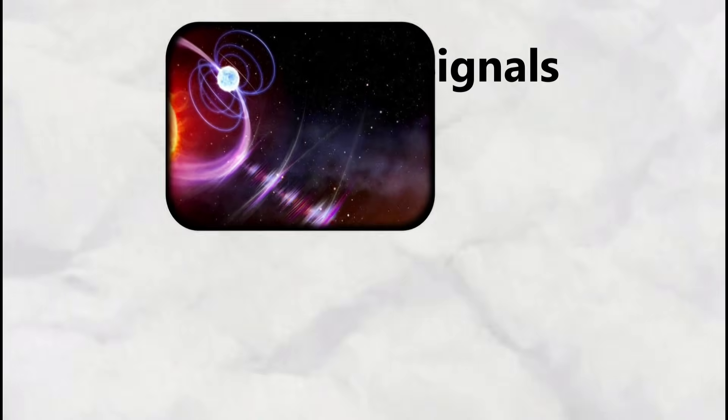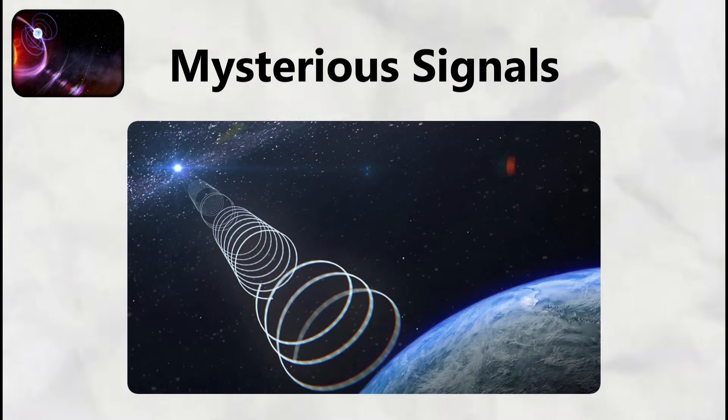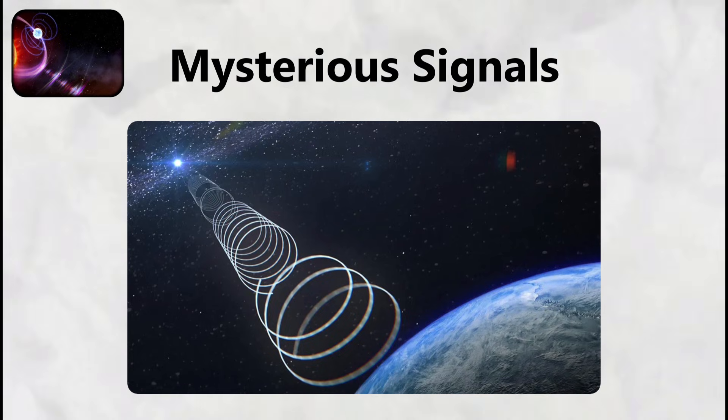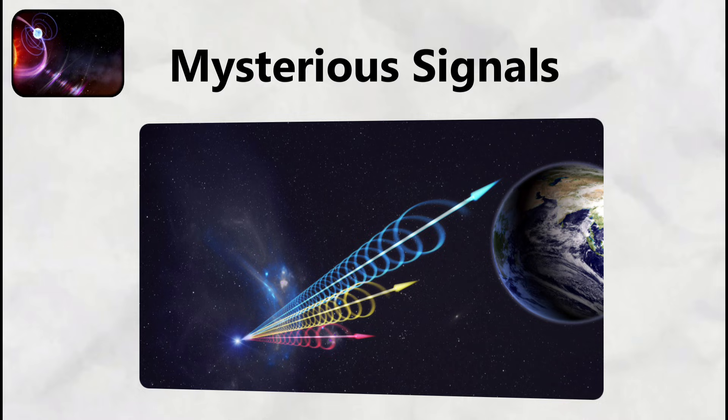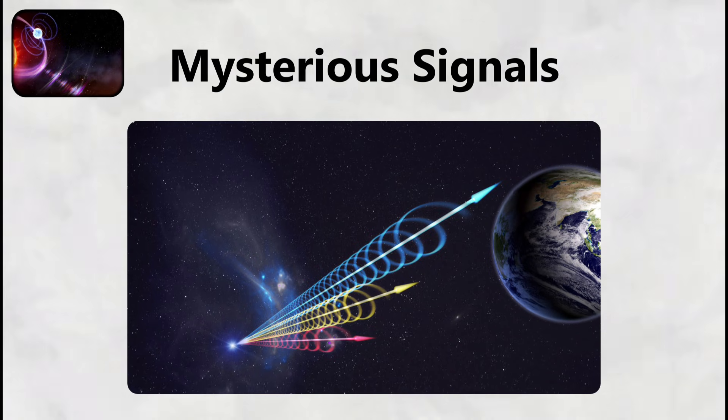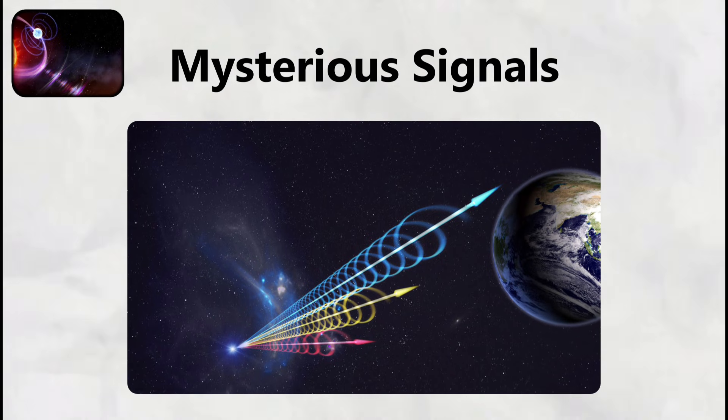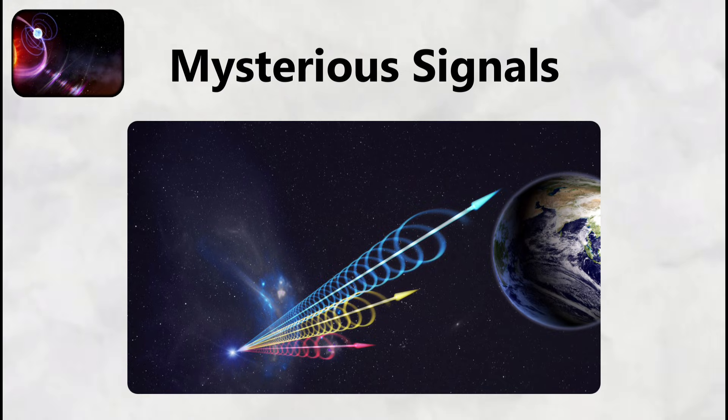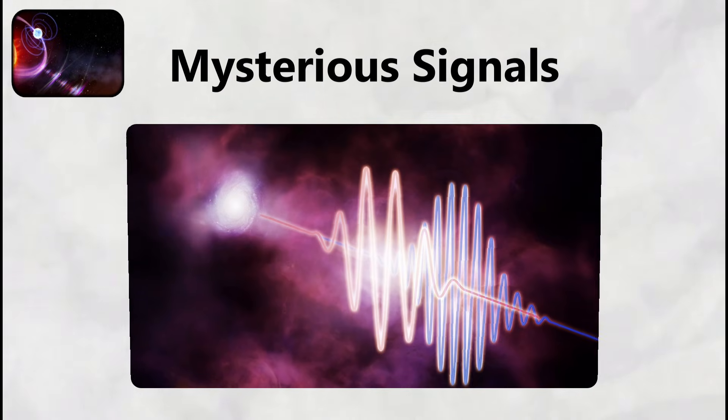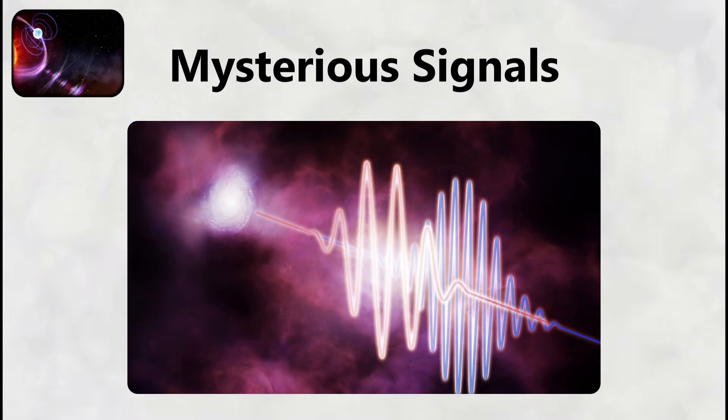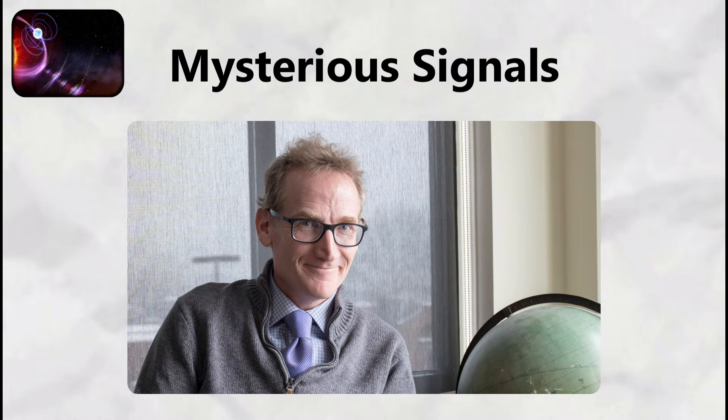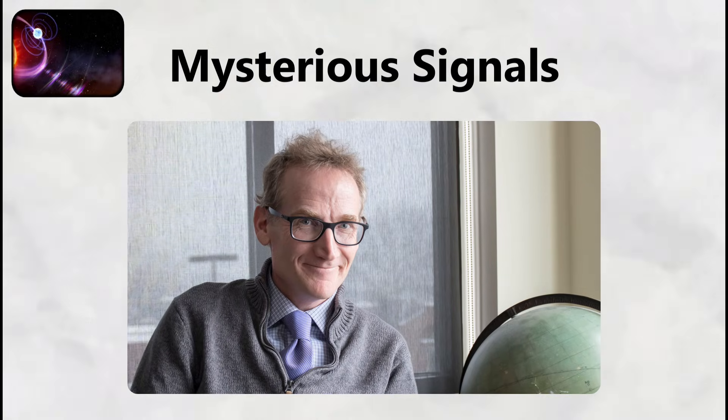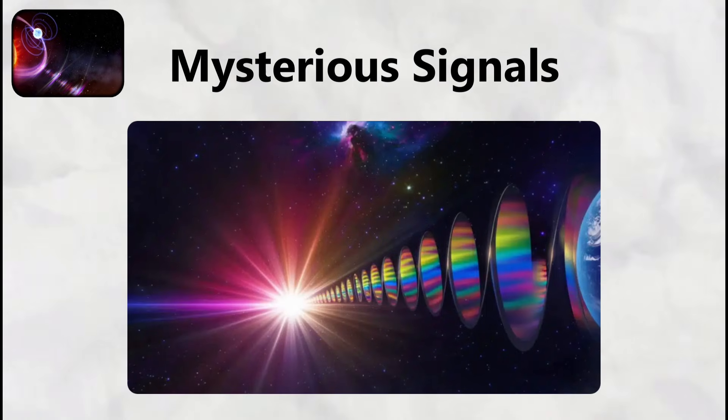Mysterious Signals. Fast radio bursts represent some of the most enigmatic and potentially terrifying phenomena detected in modern astronomy, consisting of intense flashes of radio waves that last only milliseconds but release more energy than our sun produces in an entire day. These signals were first discovered in 2007 when astronomer Duncan Lorimer found an unusual radio pulse in archived data from the Parkes Observatory in Australia. The burst, now known as the Lorimer burst,